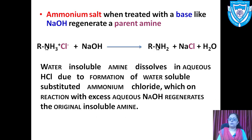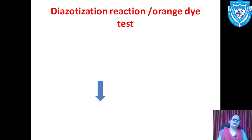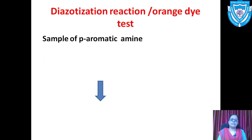This is a test to detect the basic nature of amines. The water-soluble substituted ammonium chloride, on reaction with excess NaOH, regenerates the original insoluble amine. The next test is the diazotization reaction, also called the orange dye test. In this reaction, a sample of primary aromatic amine is taken.